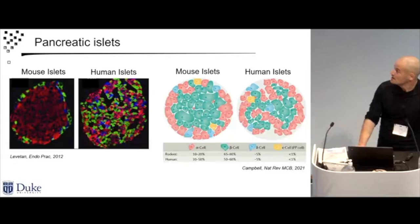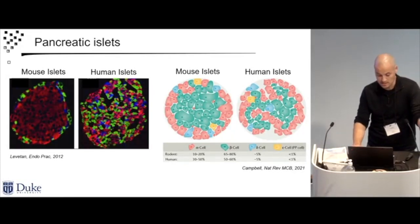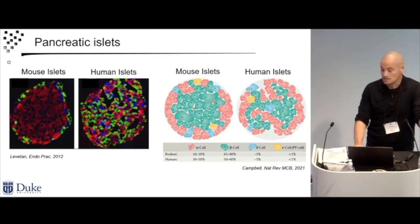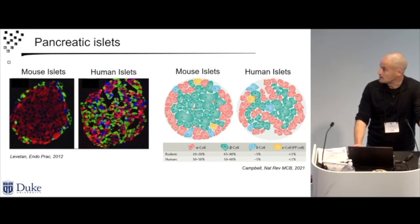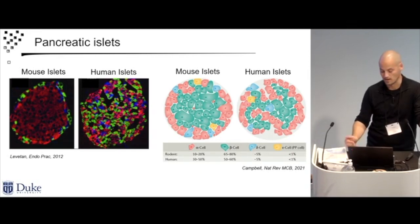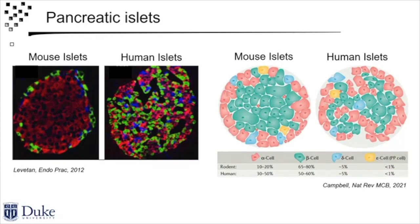This one almost seems redundant at this point — I think everybody here knows what an islet is. Something I did want to bring up is a question that Timo asked. If we look at the architecture of a mouse versus a human islet, you can see there is a lot more interaction between an alpha cell and a beta cell in a human islet, simply because there are more alpha cells. I'm going to tell you a story about how we think alpha cells are important for regulating beta cells. I think it's more important in human islets for a variety of reasons, and we can talk about that as we go.